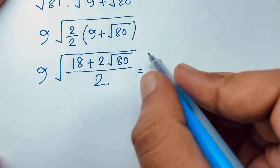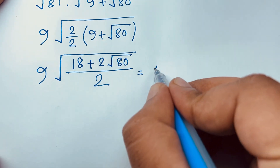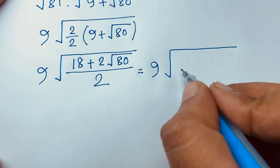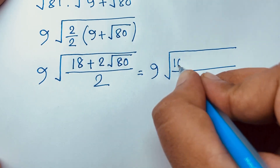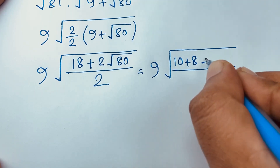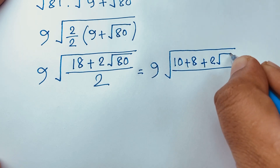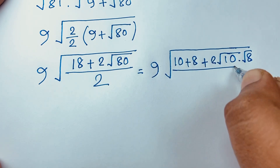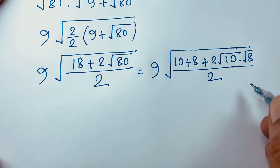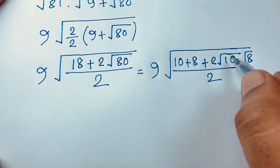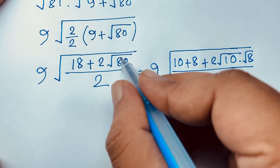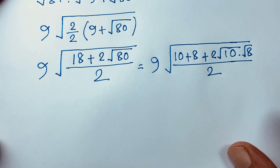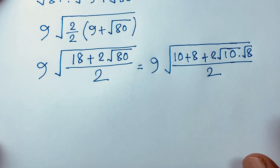Now if I calculate this radical math problem, I can see it will be 9 times square root of 18, which is 10 plus 8, plus 2 times square root 10 times square root 8 over 2. Because 80 equals 8 times 10, so square root 80 equals square root 10 times square root 8.